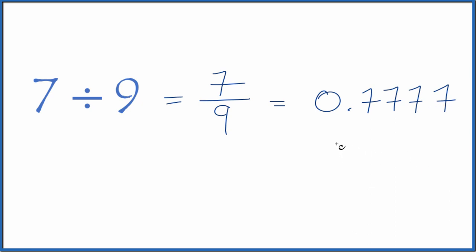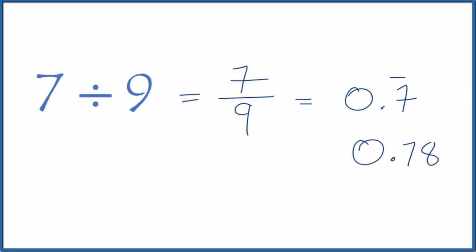So you could round this to 0.78, but it might be better to get rid of these 7's here, and then just put a bar over the 7 to show it repeats.